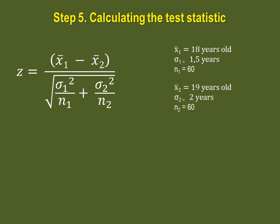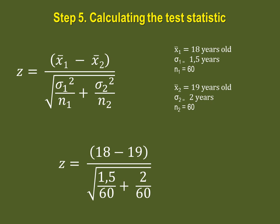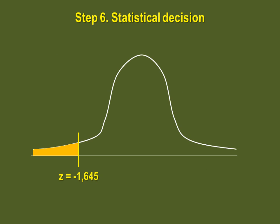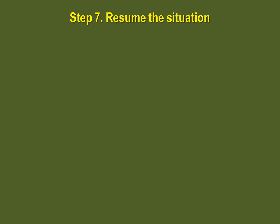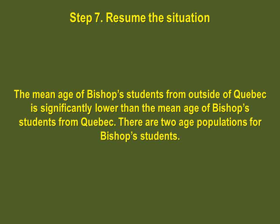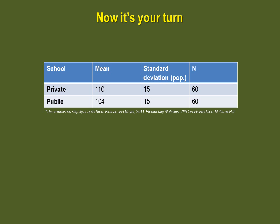Back to our example, let's assume that the values we need are as given. By plugging in the numbers correctly into the equation, we obtain a calculated z-value of minus 4.14. Step 6 requires us to take the statistical decision. Our calculated value of minus 4.14 is quite inferior to our critical z, so we reject the null hypothesis. Step 7 summarizes the situation: because we rejected the null hypothesis, we can say that the mean age of Bishop's students from outside of Quebec is significantly lower than the mean age of Bishop's students from Quebec. So there are two age populations for Bishop's students.